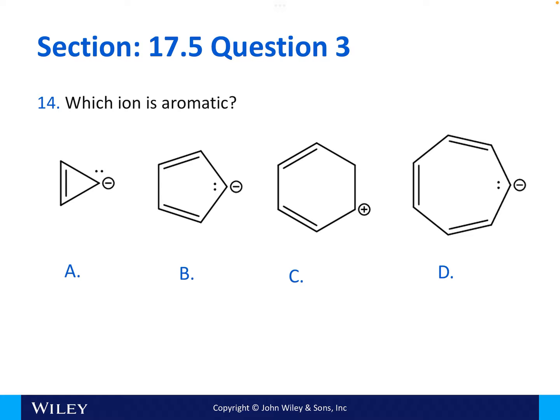Now, we're looking at anions. So, of course, the first thing we want to look for is continuous p orbital overlap. So, C has this sp3 hybridized atom in it. So, C has already been taken out of the running. If we look at A, it has two pi electrons here. And then, if we're assuming that it has p orbital overlap and that this is an sp2 hybridized orbital, we get four for our electron number. Nothing that we can do can make this fit four n plus two. And so, this is not going to be an aromatic structure.